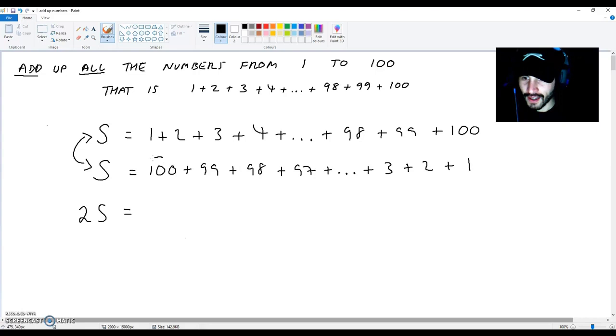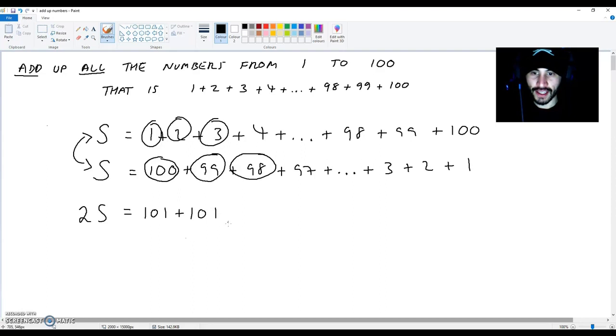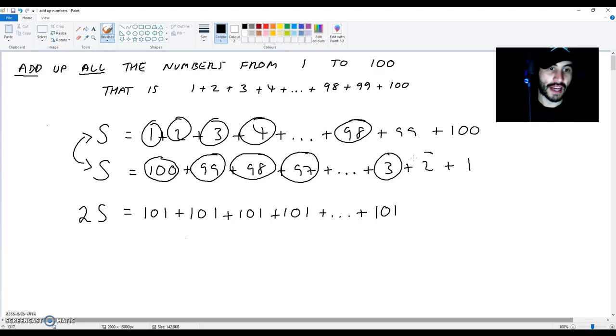If we add 100 and 1 over here, we get 101. If we add 99 and 2 over here, we get 101. If we add 98 and 3 here, we get 101. If we add 97 and 4 here, we get 101. You can see what's actually happening. Plus dot dot dot plus. If we add 3 and 98 here, we get 101. If we add 2 and 99 here, we get 101. And if we add 1 and 100 here, we get 101 again.